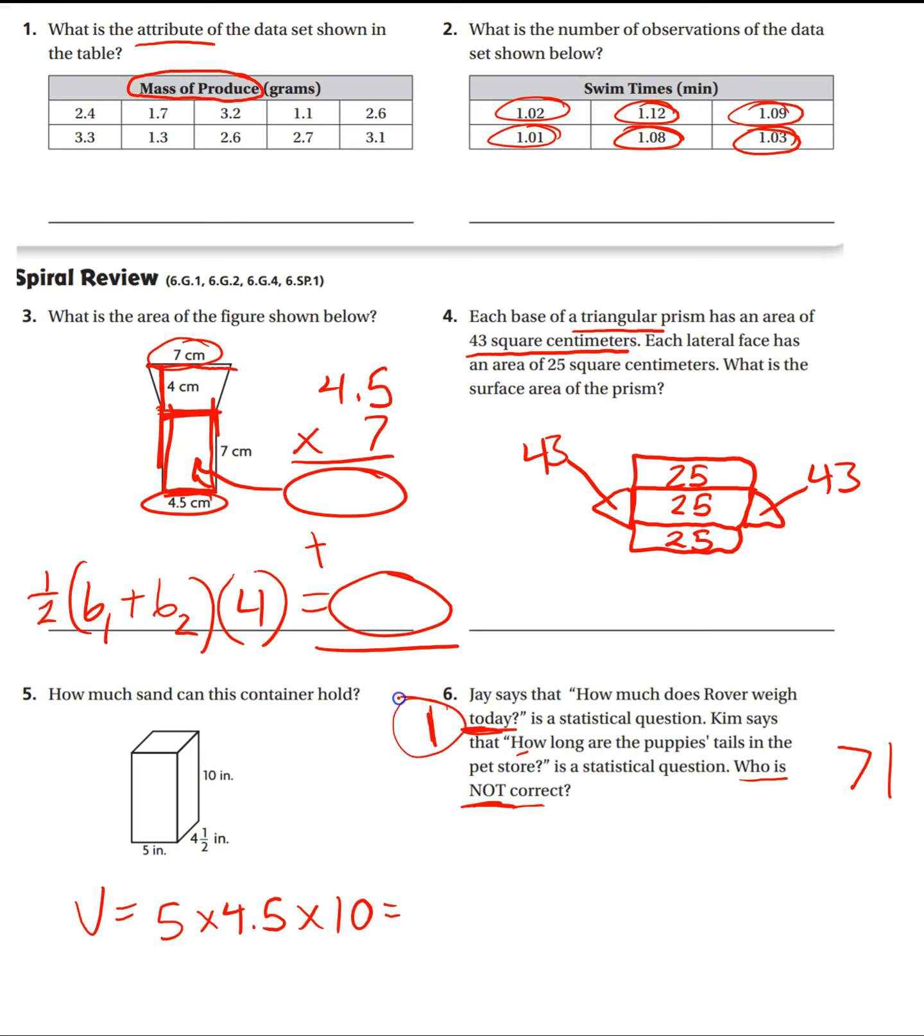So if we only have one piece of information, we've talked about this, that is not statistical. Okay, that's not going to have any variance. Okay, the puppies at the pet store are going to have all different length tails. But Rover is only going to have one weight for today. Okay, so there's no variance. Since there's no variance, it is not a statistical question. So who is not correct? Jay is not correct because there is no variance in his data.